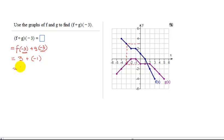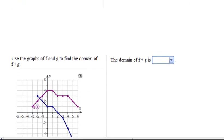So 3 plus negative 1 is 2. Therefore, f plus g of negative 3 is just 2. Now let's look at my next example.